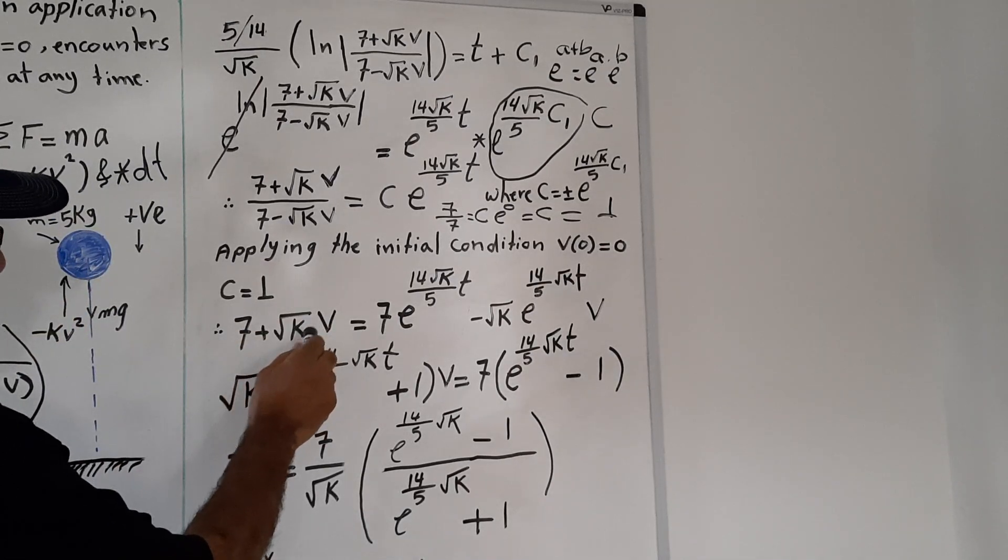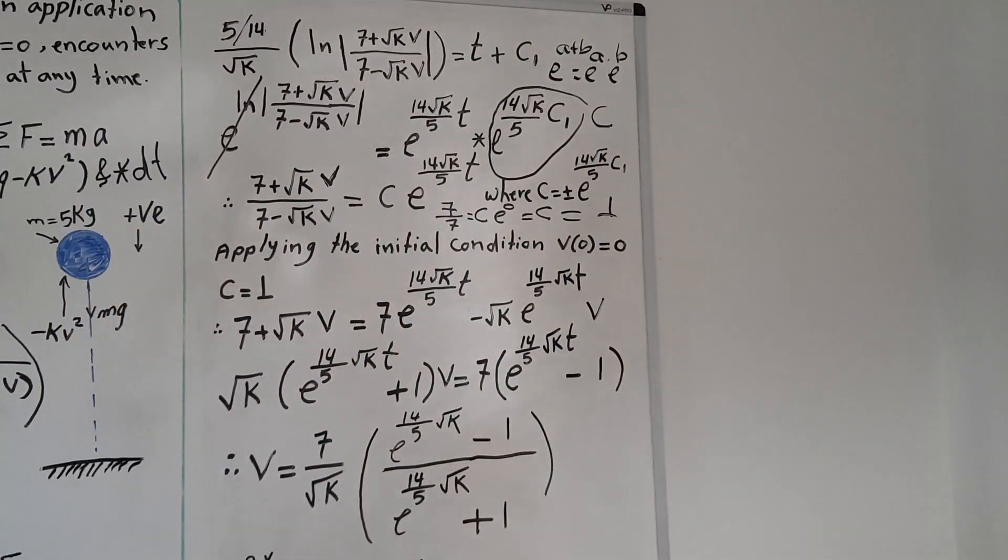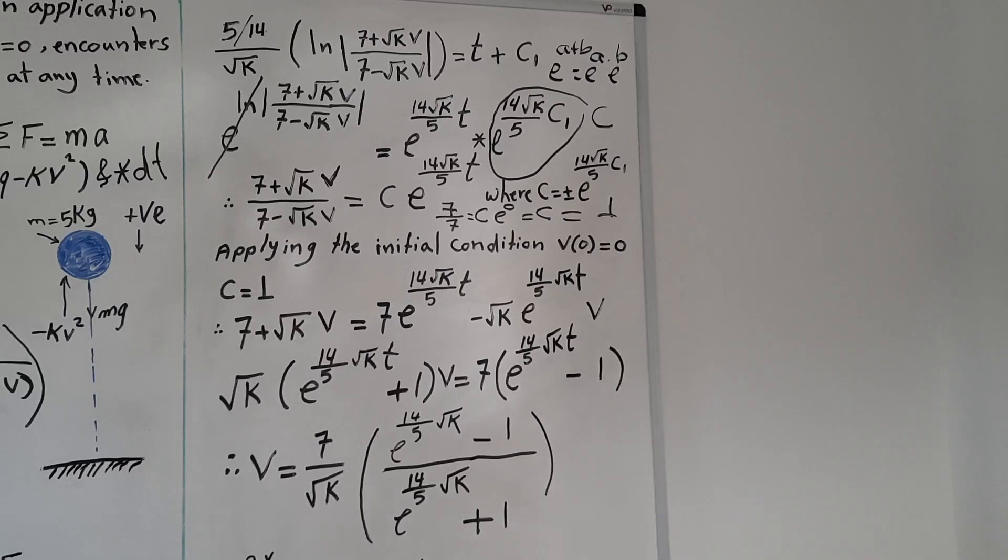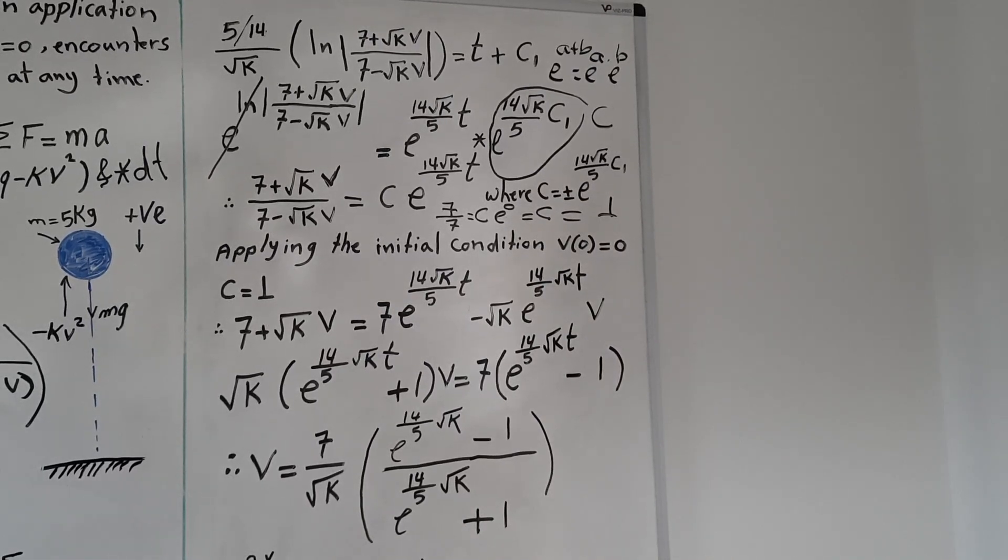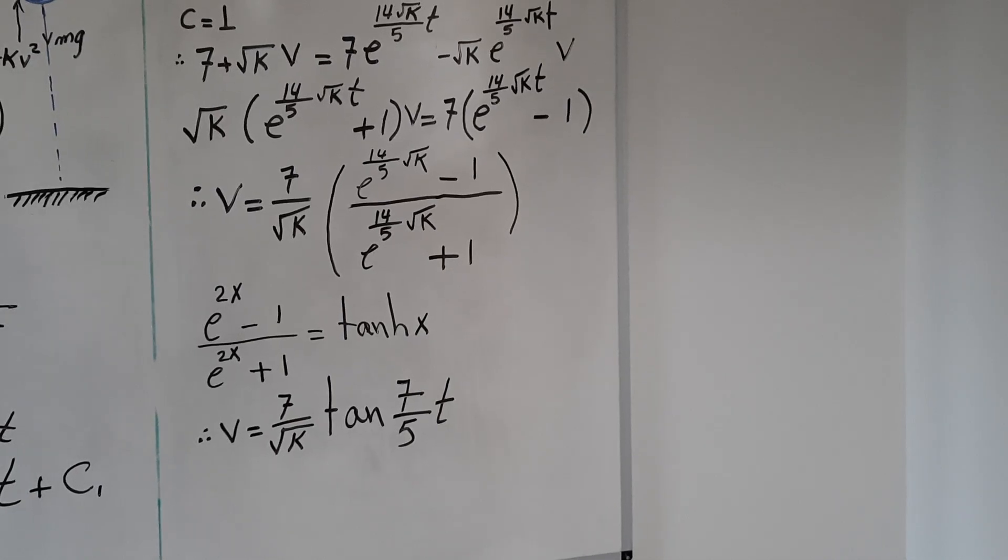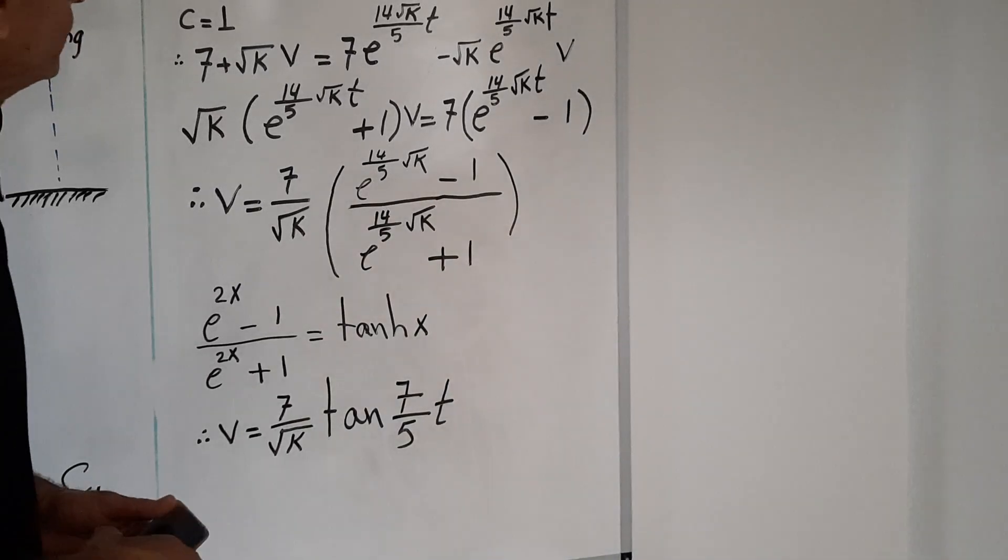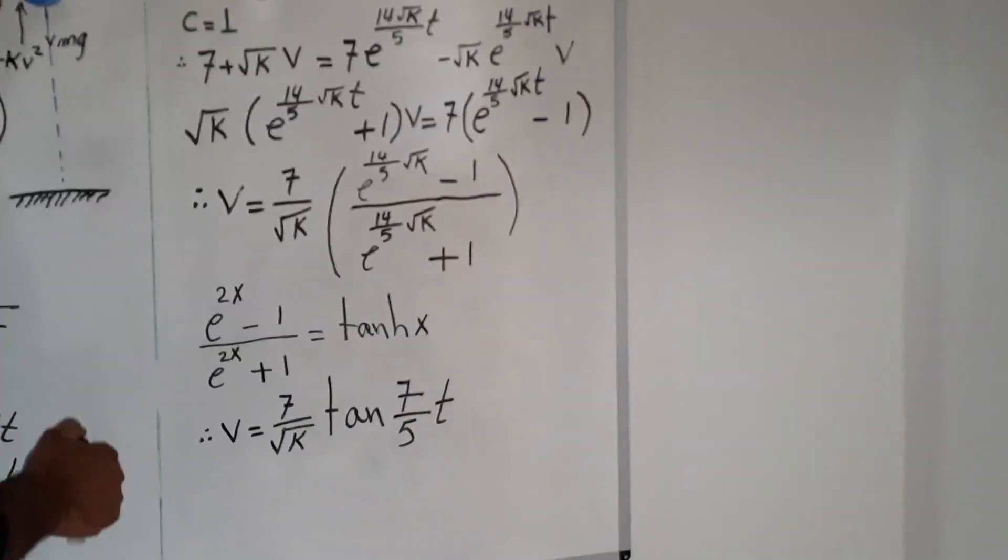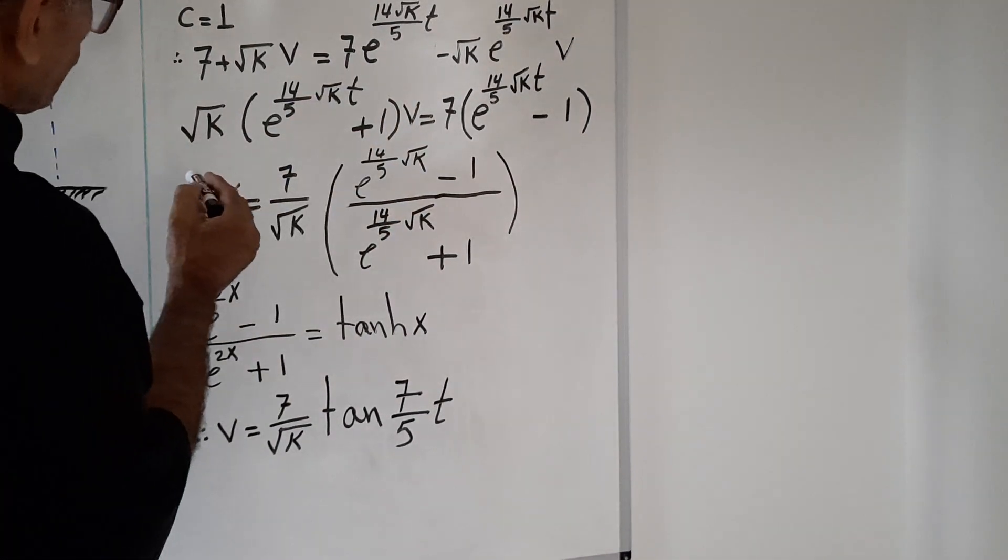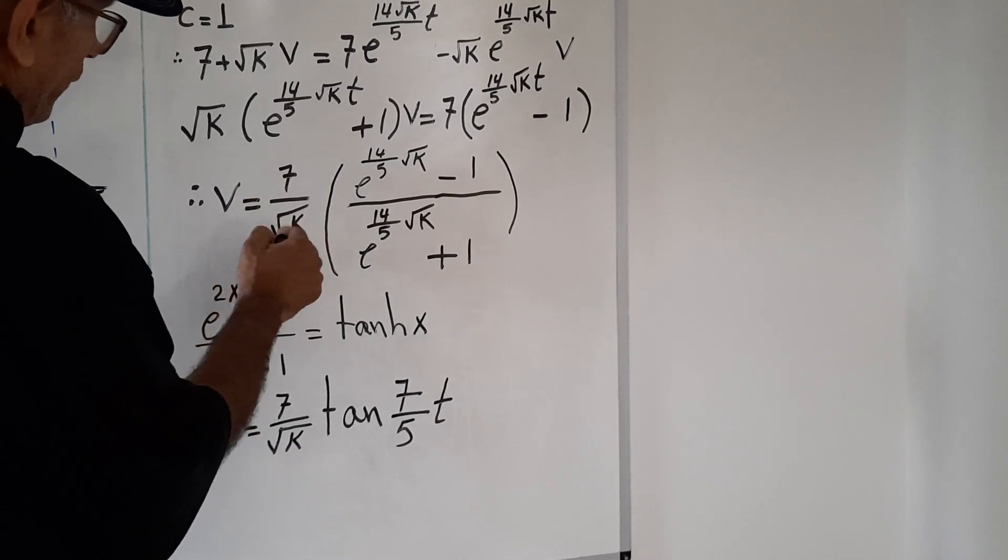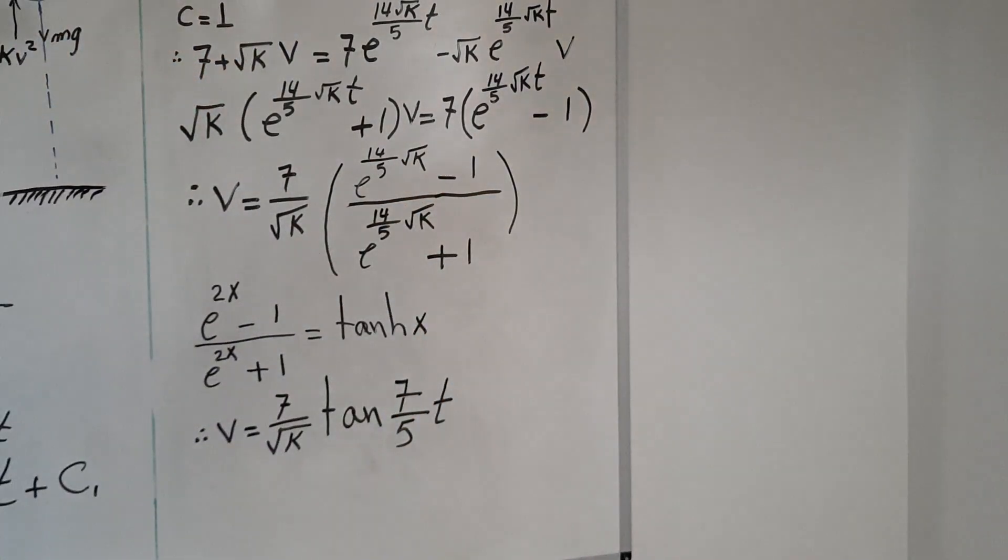Now we multiply this equation by 7 minus root square kv. We got 7 plus root square kv equals 7 minus root square kv times e to this expression. Some algebraic operation and rearranging the equation.